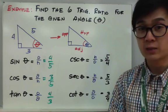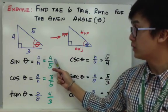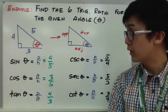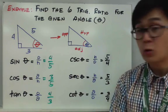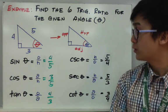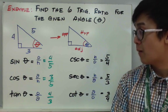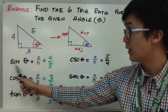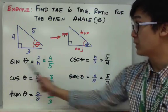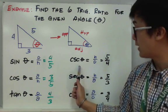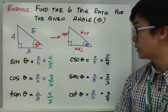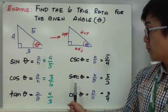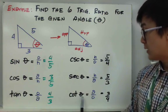So, kung gagamitin natin yung formula, makukuha natin yung 6 trig ratios kasi given lahat ng side ng triangle. For sine theta, we know sine theta is equal to opposite over hypotenuse — opposite side is 4, hypotenuse is 5, so sine theta is equal to 4 over 5. Cosine theta is adjacent over hypotenuse, so cosine theta is equal to 3 over 5. And tangent theta naman is opposite over adjacent, so it's 4 over 3. Pagkukunin nyo yung mga inverse trig functions: cosecant theta is the reciprocal of sine, so it's 5 over 4. Makukuha mo na si secant theta, which is 5 over 3, at cotangent theta, which is 3 over 4.